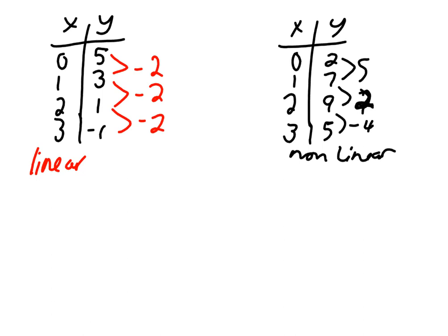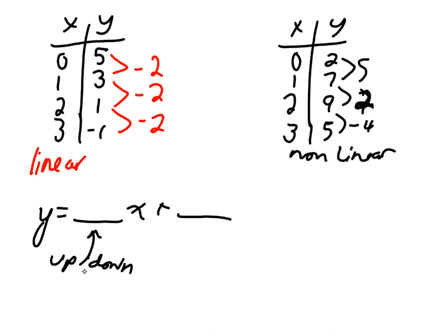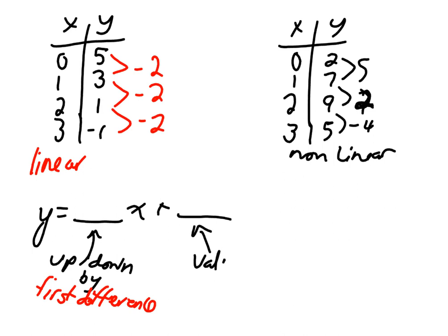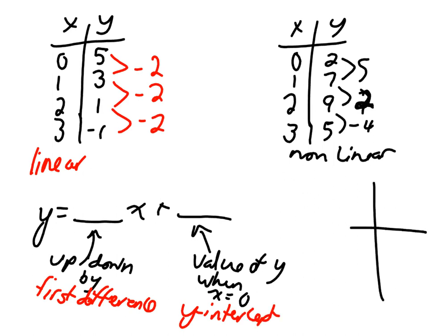Then we looked at how we could go from knowing that it's linear to forming an equation. We looked at this basic structure of an equation, and we learned that this was what you go up or down by — a new fancy word we learned called first difference. Then we learned that this number was the value of y when x was zero, and we learned that that was something called the y-intercept, which is simply where the line crosses the y-axis.